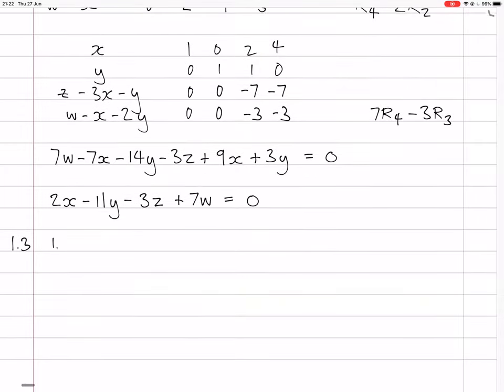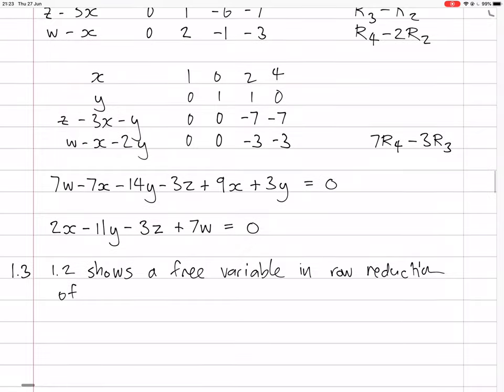So 1.2 shows free variables and so non-trivial solutions because there's a row of zeros, so there's a free variable. So it shows there's a free variable. I mean, there is only one, but this is... It shows a free variable in the reduction, in the row reduction of the system.